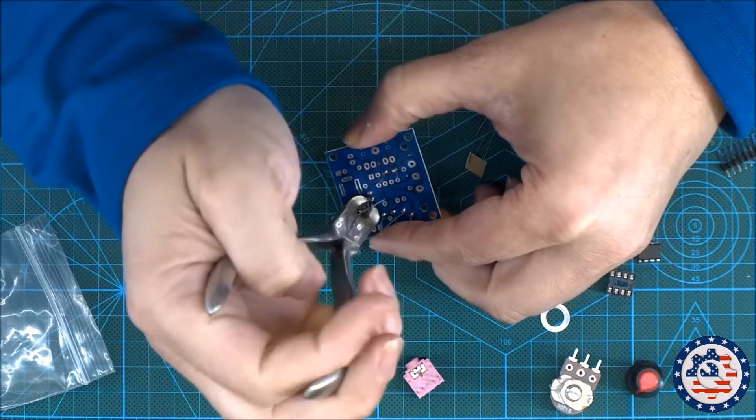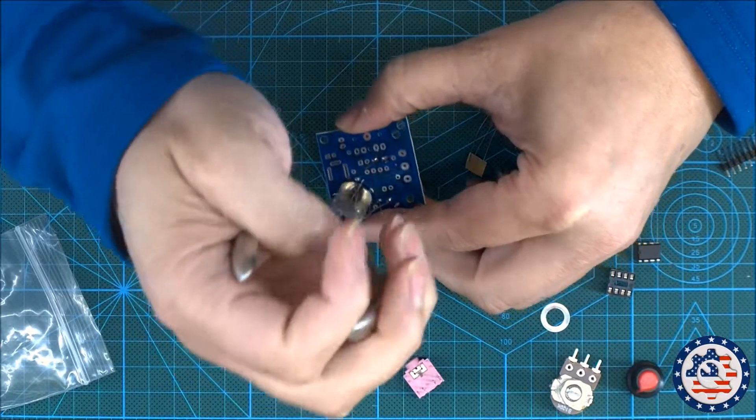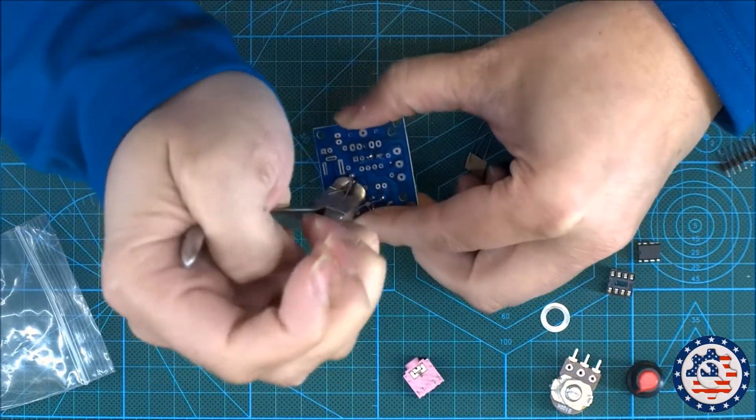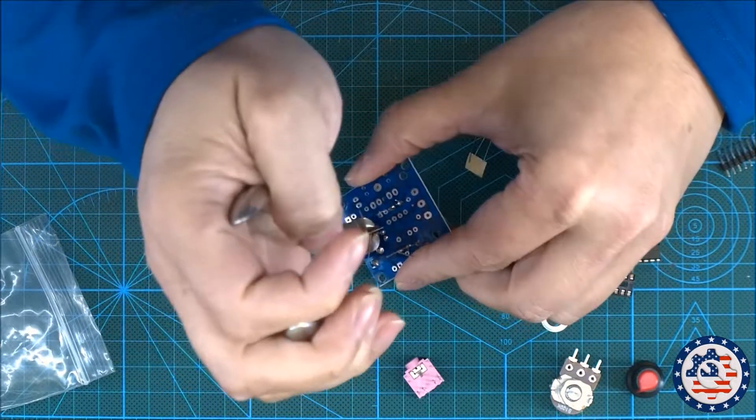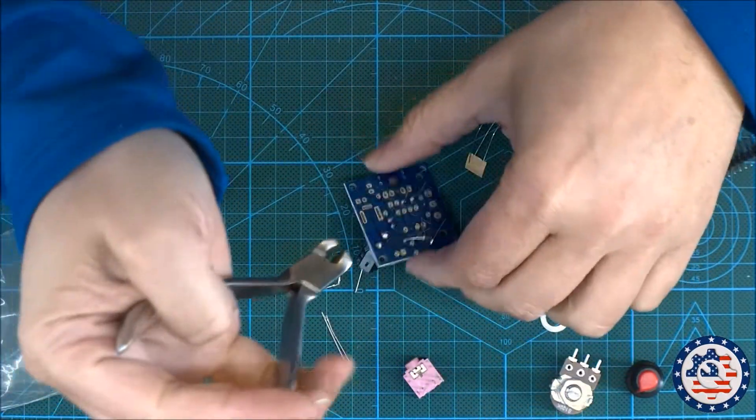So let's trim all the wires again as close as possible to the PCB without damaging the solder joint.